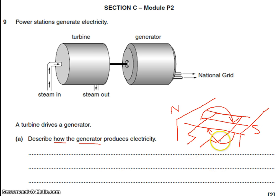In real power stations, what you actually tend to get is the magnet being rotated inside a fixed coil of wire. It does not matter which way around you describe it.